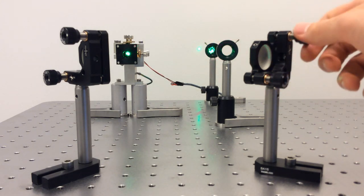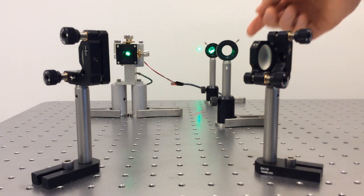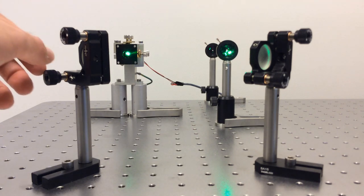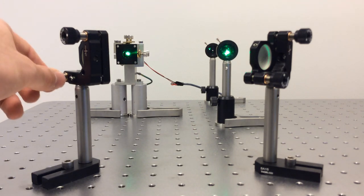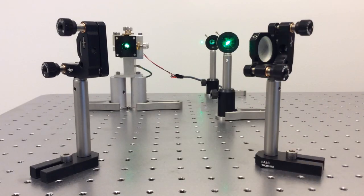When I close the first iris you can see that the beam no longer goes through the center. So I have to go back to my first mirror and iterate the adjustment process. And now the beam goes through both pinholes.